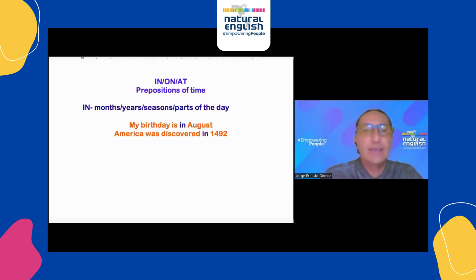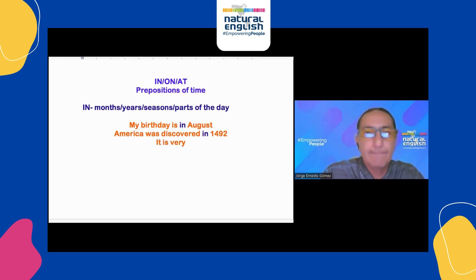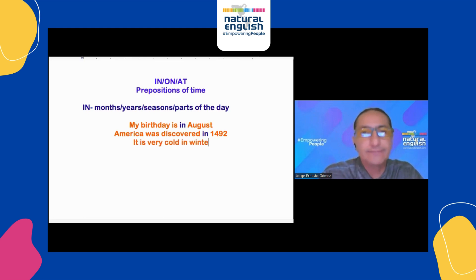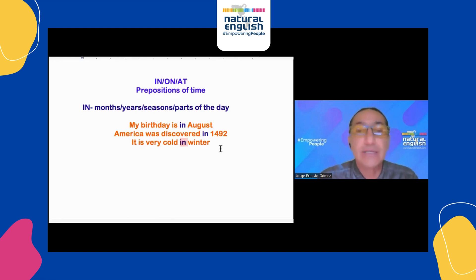With seasons, we use 'in' before any season. For example, it is very cold in winter. So we have: in summer, in spring, in autumn, in winter. It is very cold in winter.